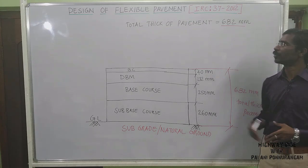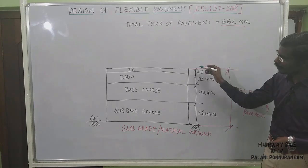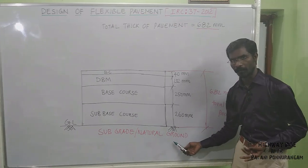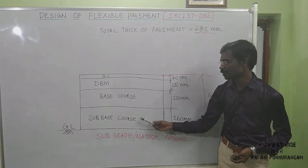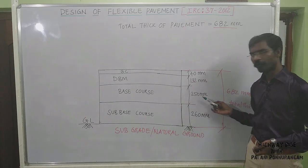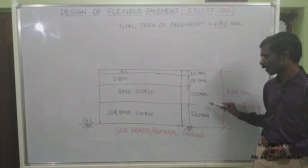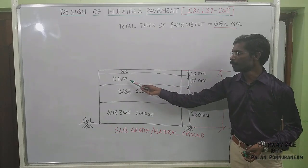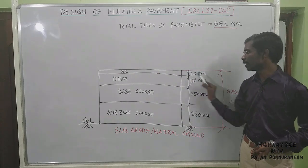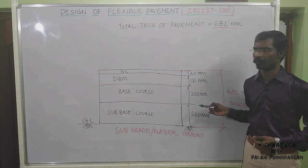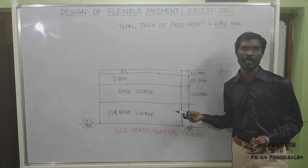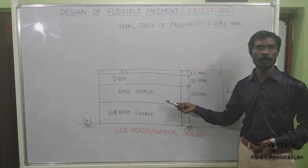Based on the calculated total thickness of 682 mm, we draw the final diagram showing the different pavement layers: Subgrade or Natural Ground Level at the bottom; Subbase course of 260 mm; Base course of 250 mm — both given in the chart; DBM (Dense Bituminous Macadam) of 130 mm; and BC (Bituminous Course) of 40 mm. All layers together give the total thickness of 682 mm for the proposed road. This completes the design of flexible pavement layers.